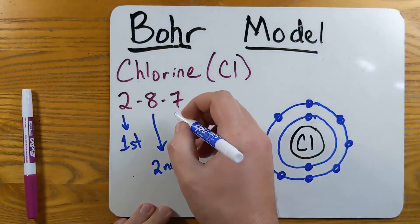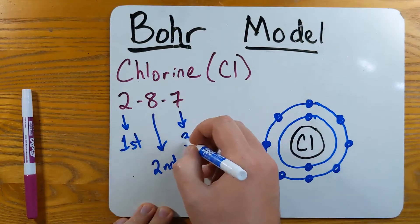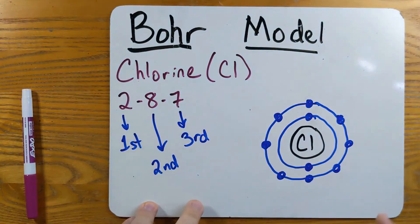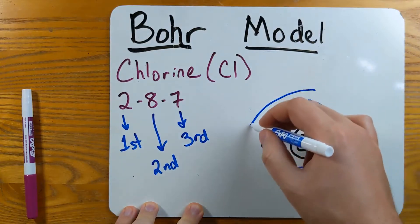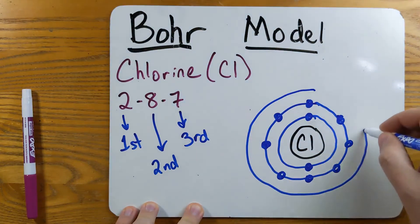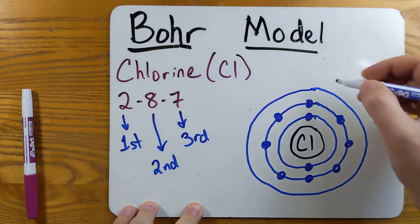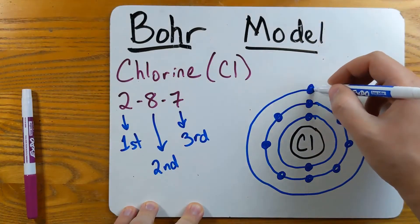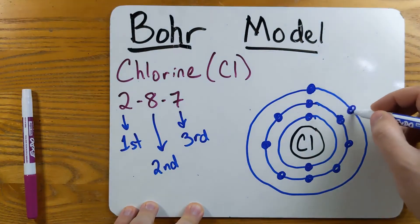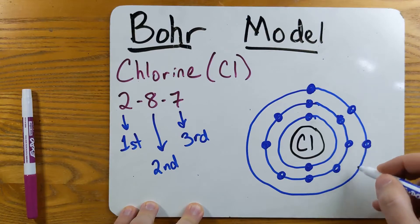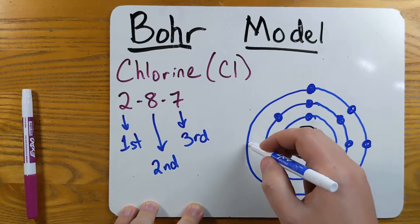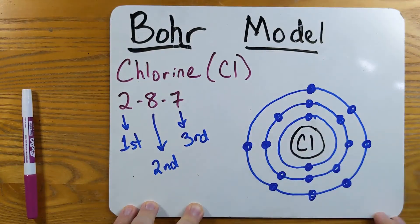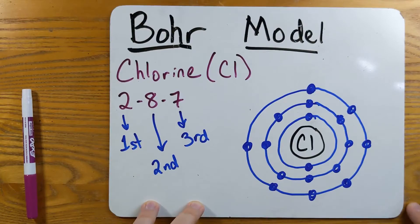Now my third energy level has seven electrons. So I'm going to draw seven dots: one, two, three, four, five, six, seven. And that is the Bohr model for chlorine.